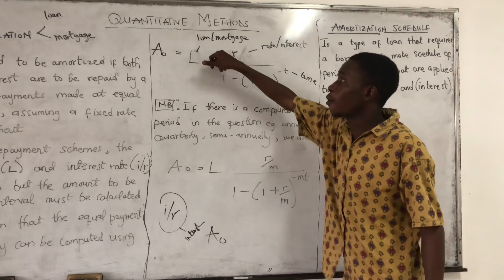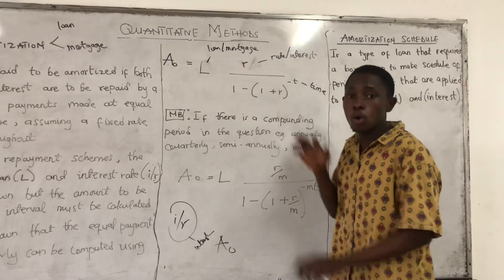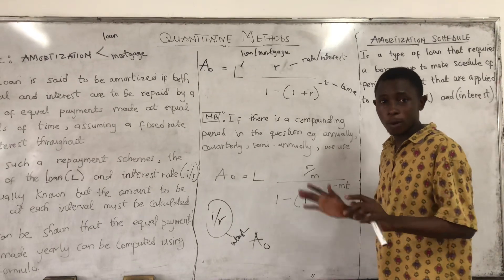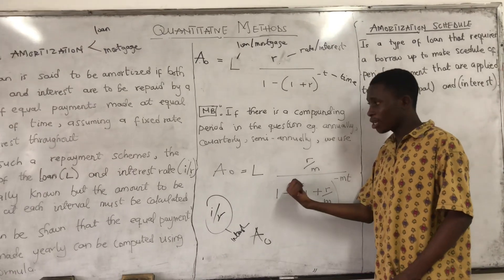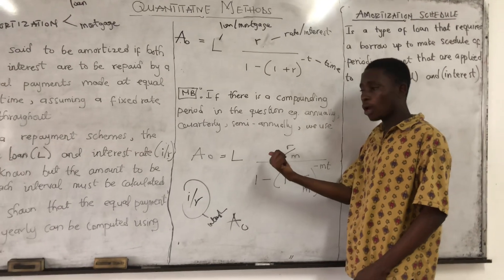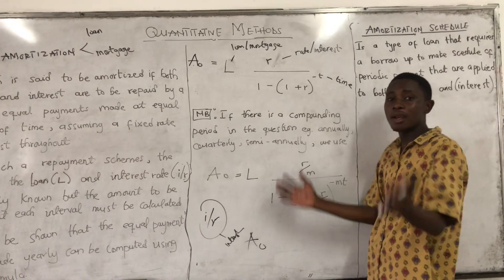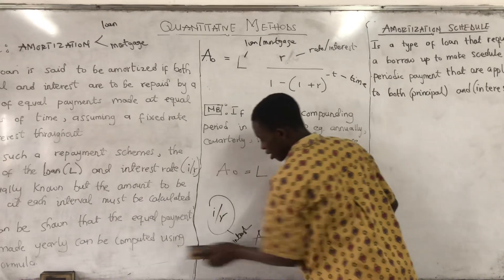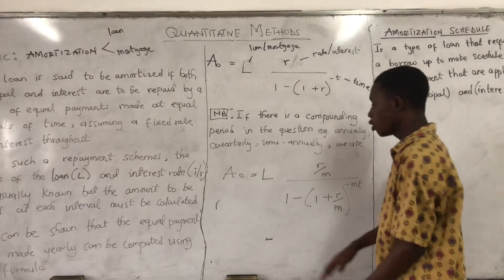And we use this formula to calculate amortization when there is no compounding period, meaning there is no annually, semi-annually, quarterly, monthly in the question. But we use this when we have the quarterly, semi-annually, when we have the compounding period in the question. That's when we use this formula.